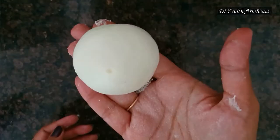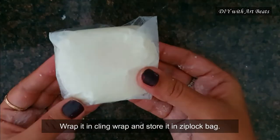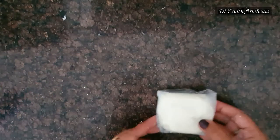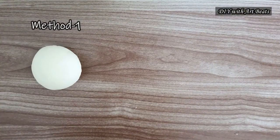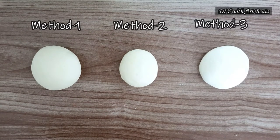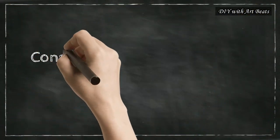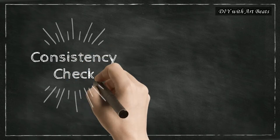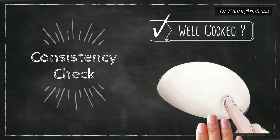Now wrap it and store it in a resealable plastic bag or container. Our all 3 methods are done. So now we will check the consistency of the clay and test if it is well cooked or not. We will perform 3 checks here.